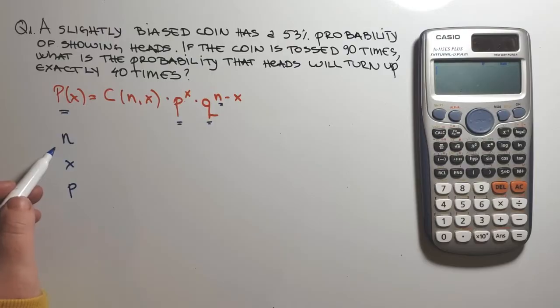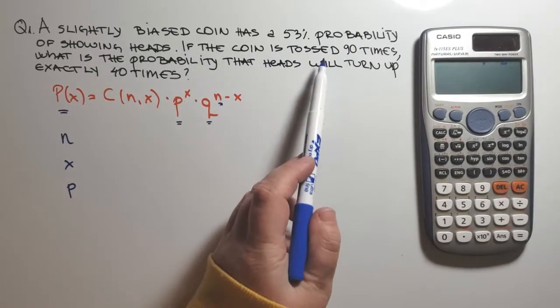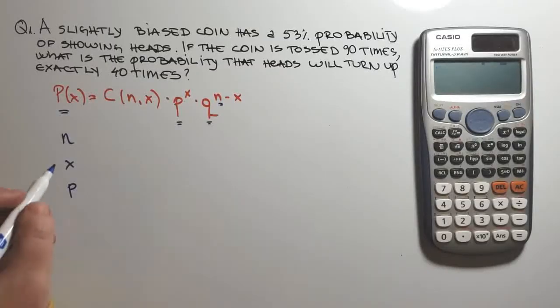N is the number of trials. So we look at the problem and we see if the coin is tossed 90 times. So we have 90 trials.